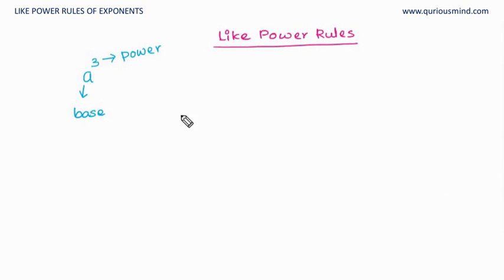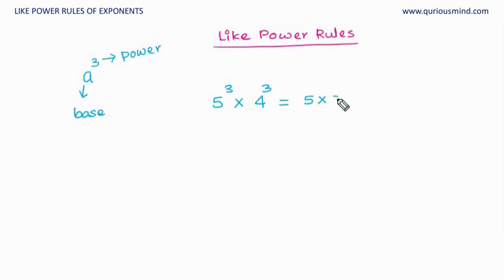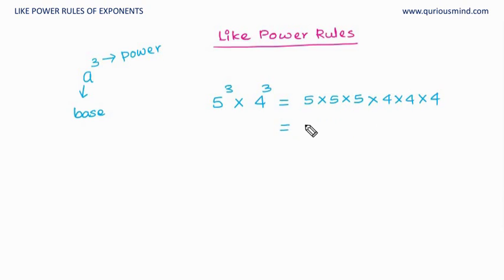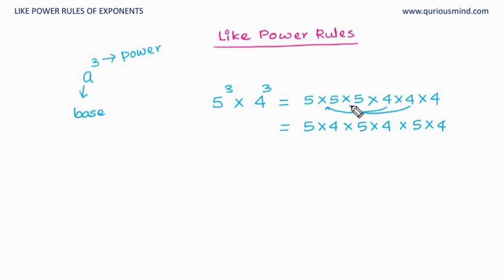Let's take an example: 5 raised to 3 multiplied by 4 raised to 3. We have different bases but the same power. This means 5 × 5 × 5 (three times) multiplied by 4 × 4 × 4 (three times). Using the commutative rule of multiplication, I can rearrange this as 5 × 4 × 5 × 4 × 5 × 4 — sandwiching the 4s in between the 5s.